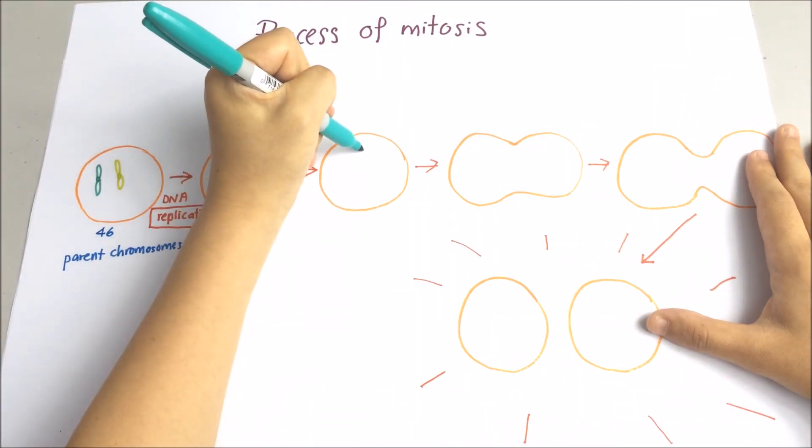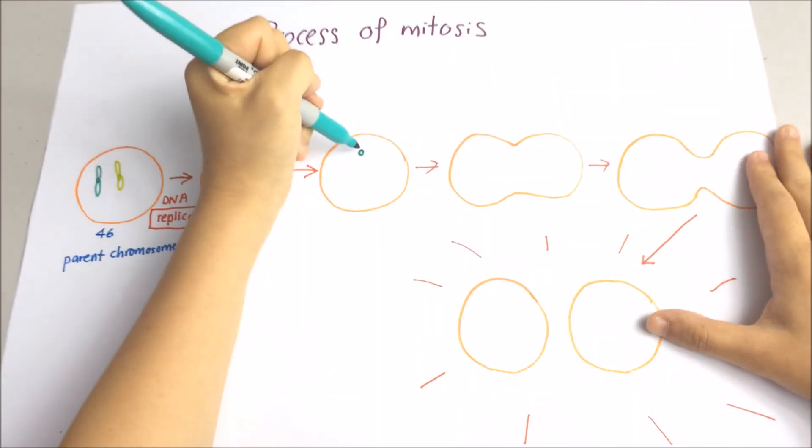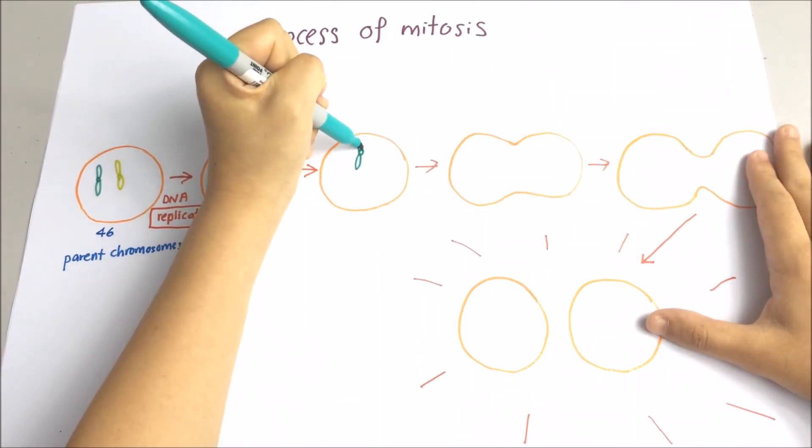So what happened next step? The chromosomes will arrange themselves in one line at the equator.